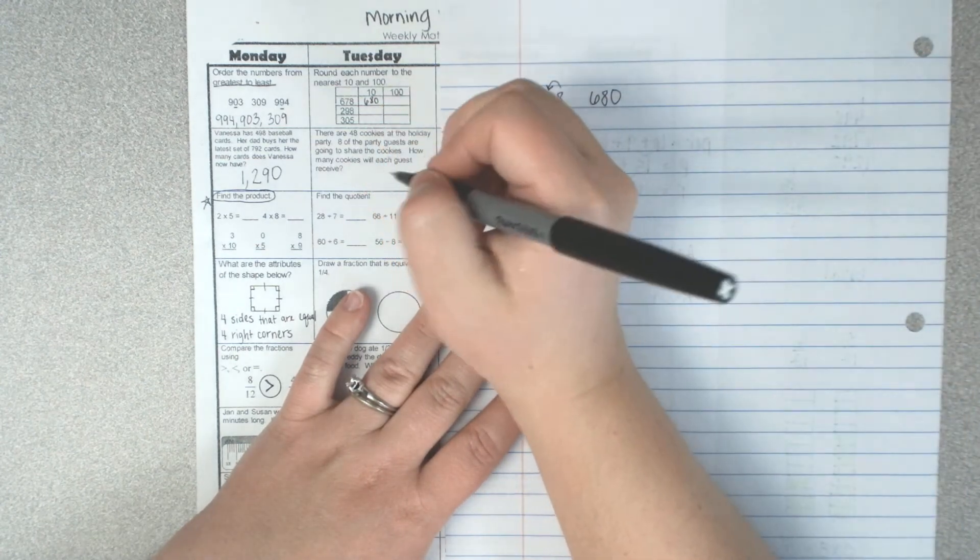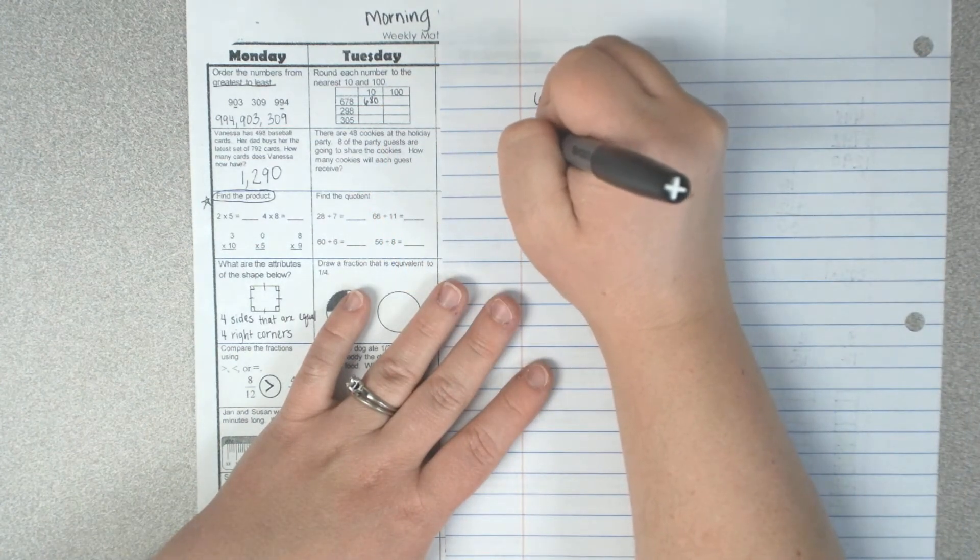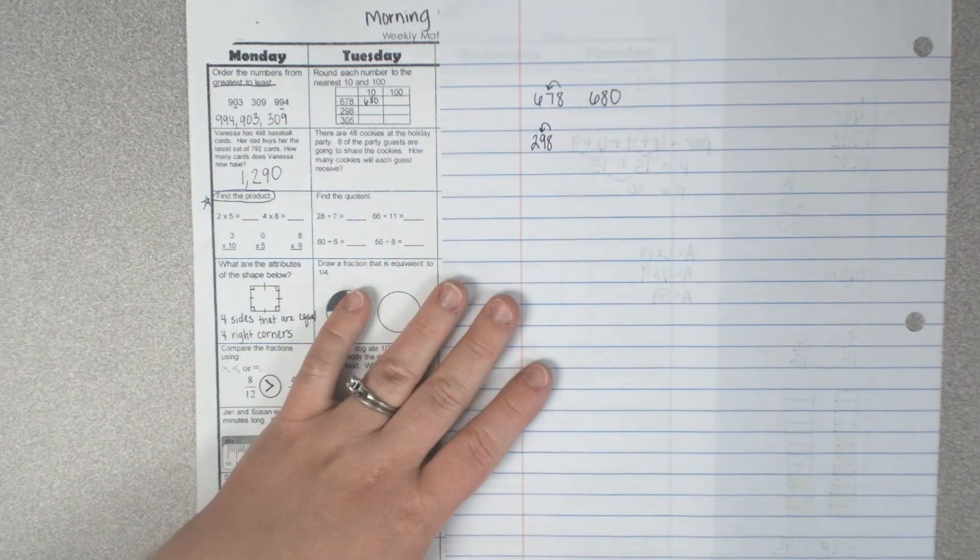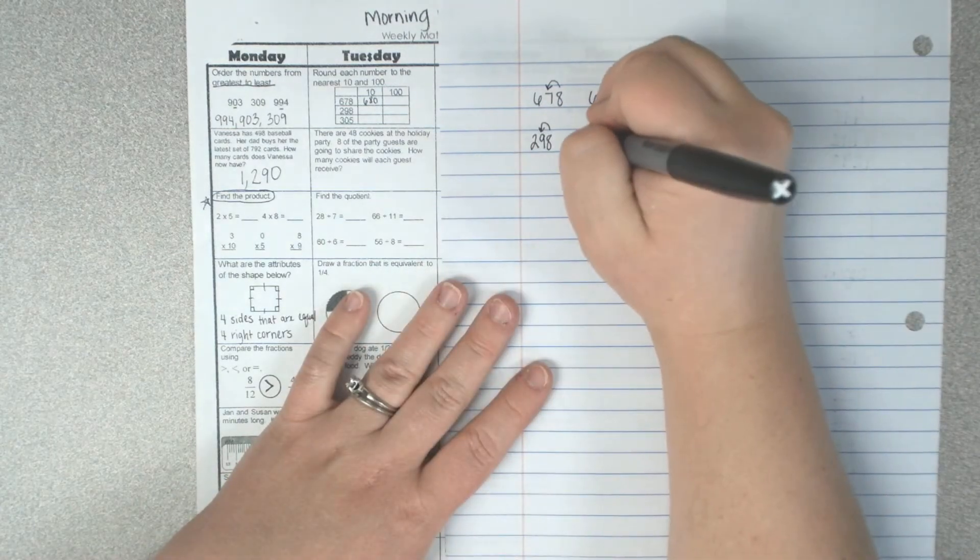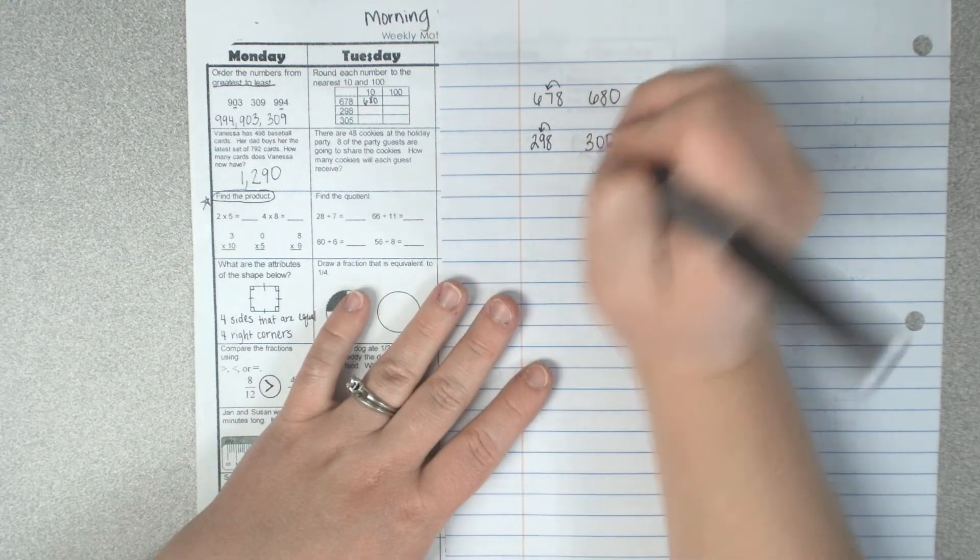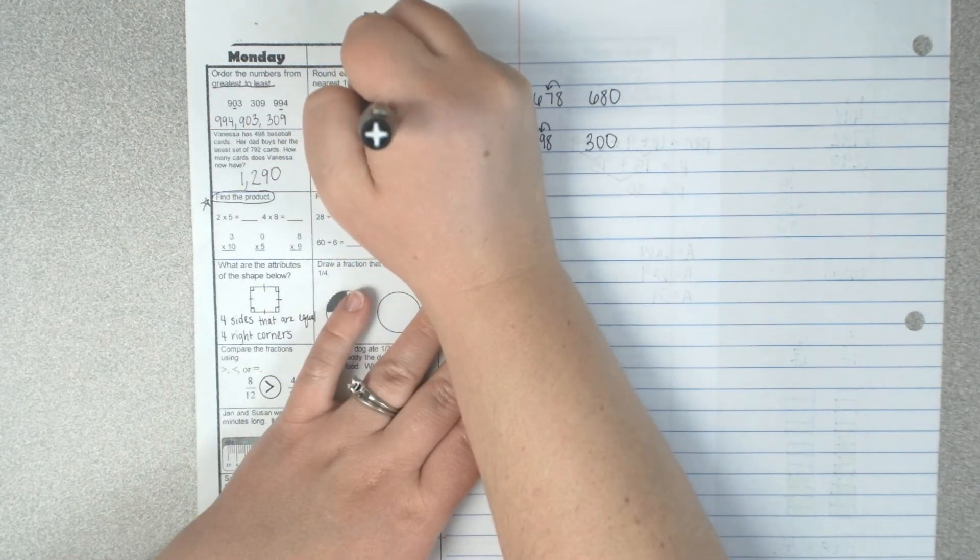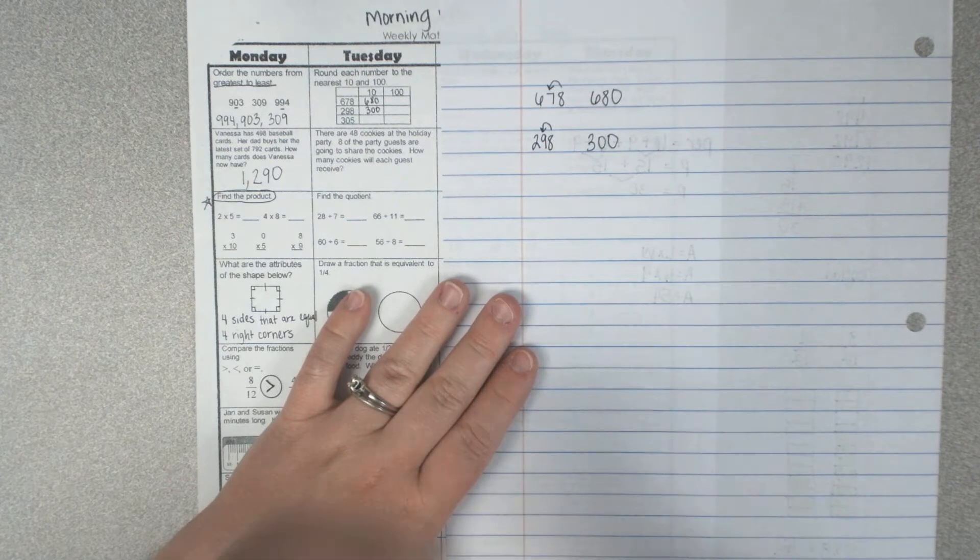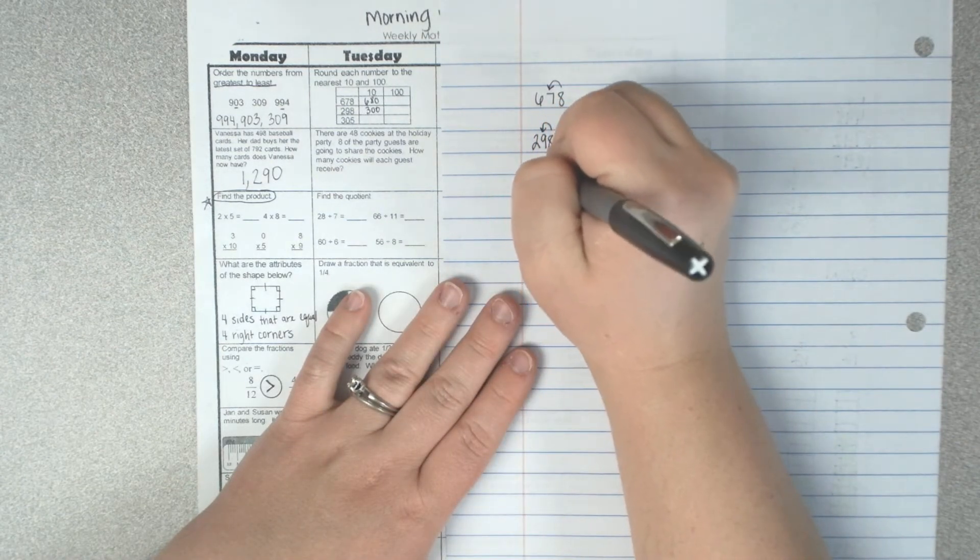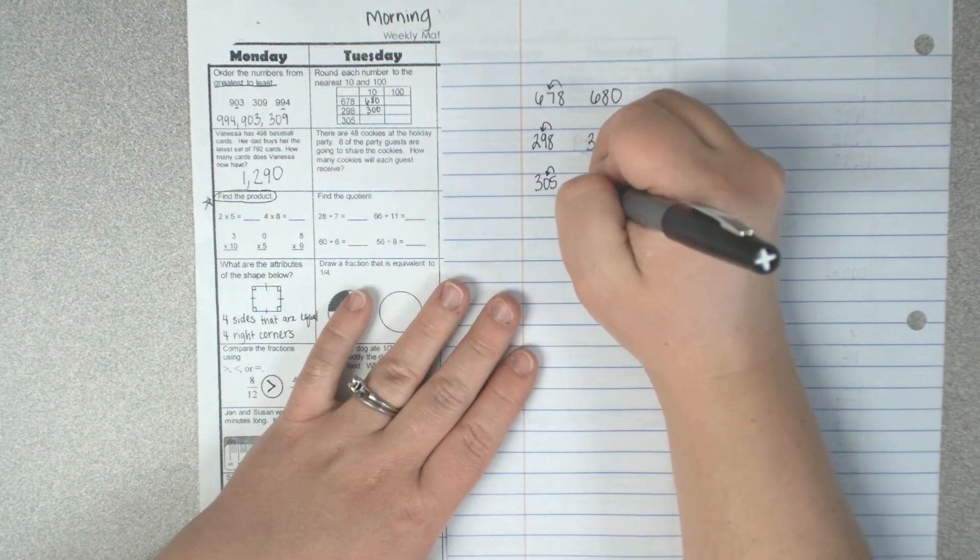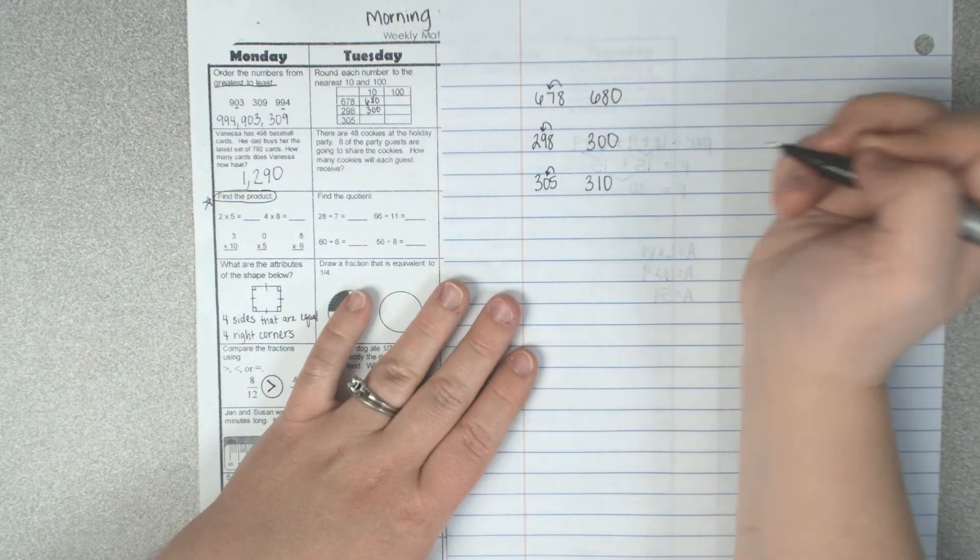I'm just going to go straight down for 298. This eight tells this one to round up, but oh my goodness, to go up to nine would be a whole ten. So now this turns into 300. The whole thing rounds up. For 305, this five tells this zero to round up. So now this gets rounded to 310.